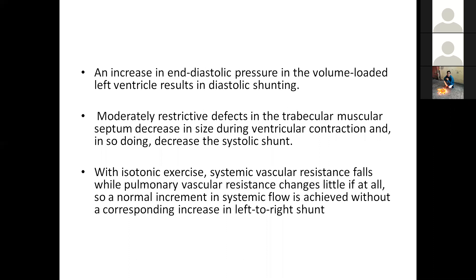Moderately restrictive defects in the trabecular muscular septum decrease in size during ventricular contraction, thereby decreasing the systolic channel. With isotonic exercise, systemic vascular resistance falls while pulmonary vascular resistance changes little if at all. Thus, normal increment in systemic flow is achieved without a corresponding increase in left-to-right shunt with isotonic exercise.